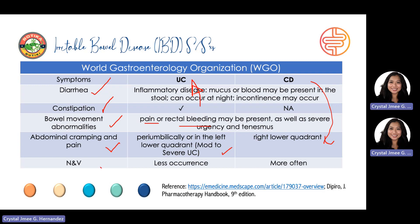Nausea and vomiting also occur with Crohn's disease and ulcerative colitis, although it is more often in CD than ulcerative colitis. The manifestations of inflammatory bowel disease generally depend on the area of the intestinal tract involved.